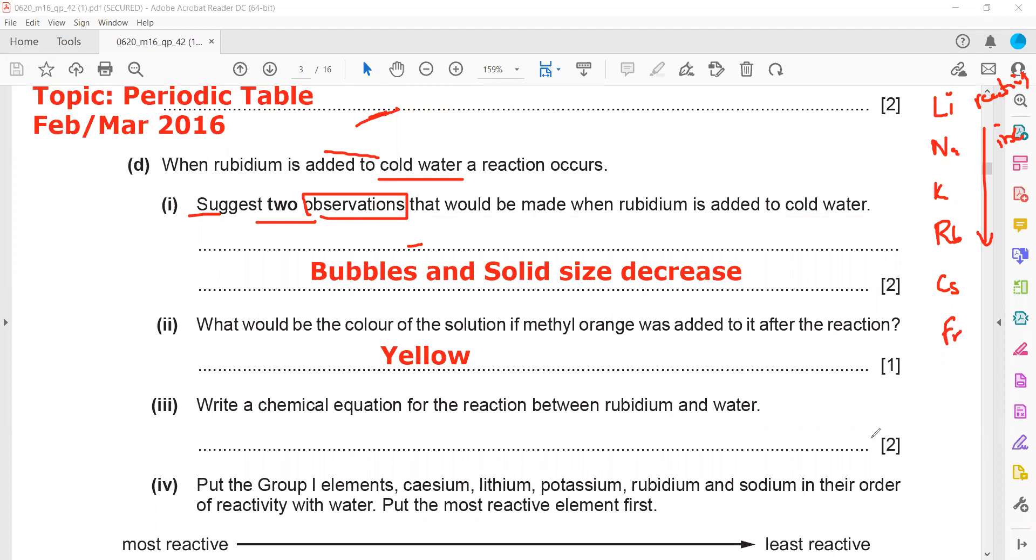So chemical equation, why is it of two marks? One mark is for writing the correct formula and the second mark is for balancing. So rubidium symbol is Rb, and because it's a metal, it exists as an atom. Added to water, which is H2O, as a result it produces rubidium hydroxide. How to work out the formula of rubidium hydroxide?